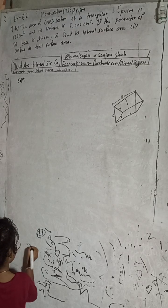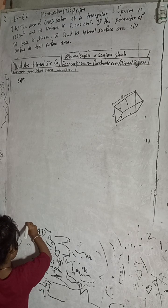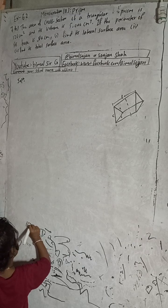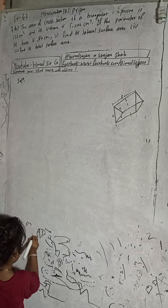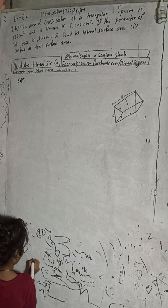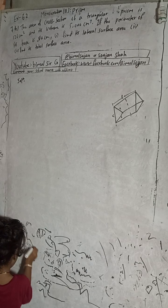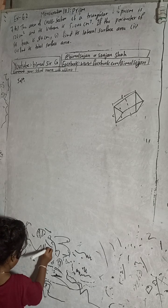Hi class 9 and 10 students, welcome back to Bhimalsarji YouTube channel. This is question number 7b, exercise 6.2, mensuration second part — prism.